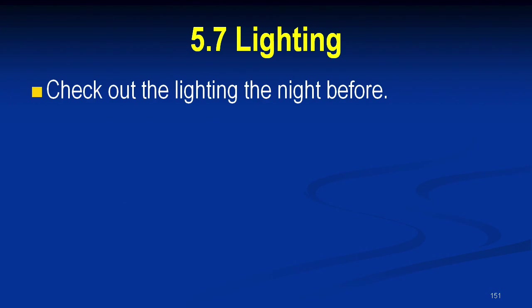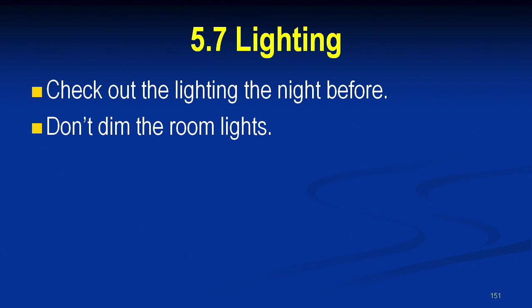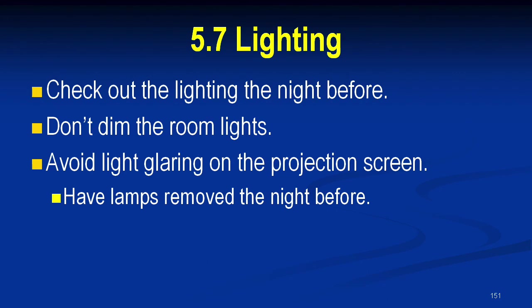5.7 Lighting. Check out the lighting the night before. Don't dim the room lights — I never turn off the lights. I want my lights as bright as possible, which means I have to make other compromises. We're leaving the lights bright and figuring out how to remove the wash on the screen, which means I need high-intensity projectors. Sometimes I can't get the projector I want, so I have to compromise. Controlling lights can be difficult — you often can't turn off just some of them. That's why you get there the night before, not the morning of. Avoid light glaring on the projection screen.